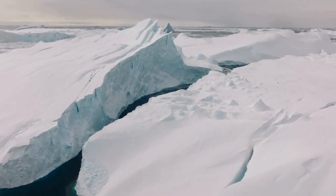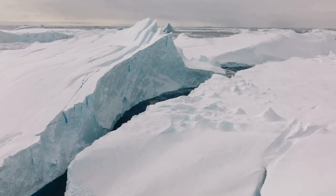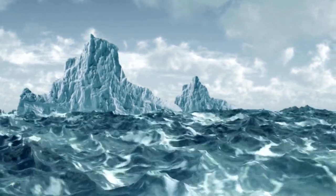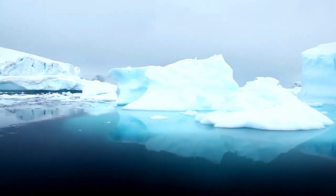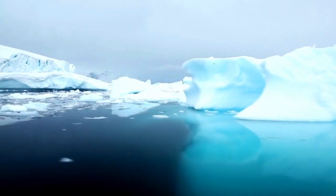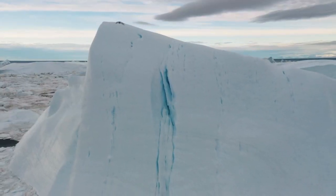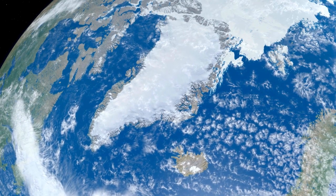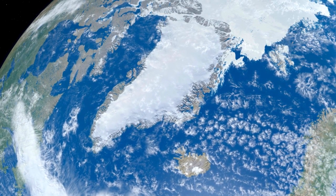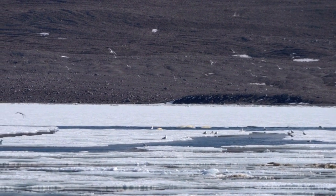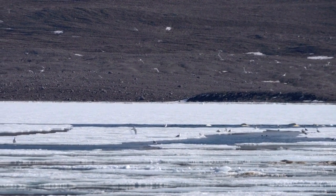For years, a glacier situated at the base of a 1,200-meter-high mountain above the Dixon Fjord in the Arctic had been thinning due to rising global temperatures. As the glacier melted, the mountain above became increasingly unstable, as it relied on the glacier for support. On the fateful day of September 16, 2023, the glacier collapsed, causing an enormous mass of ice and rock to crash into the water, generating enough force to fill around 10,000 Olympic-sized swimming pools.